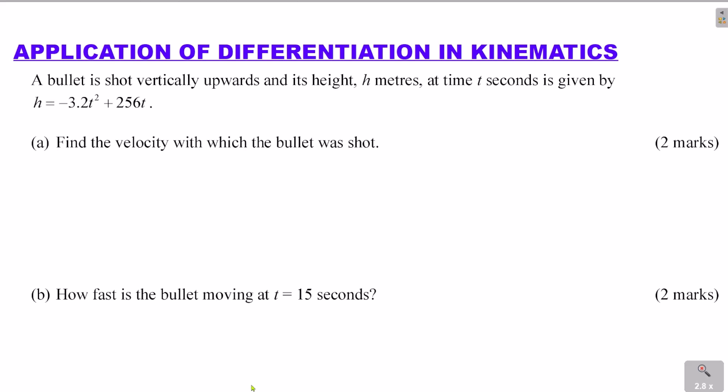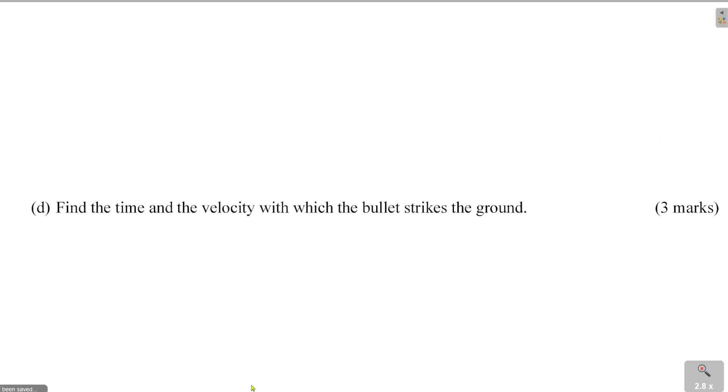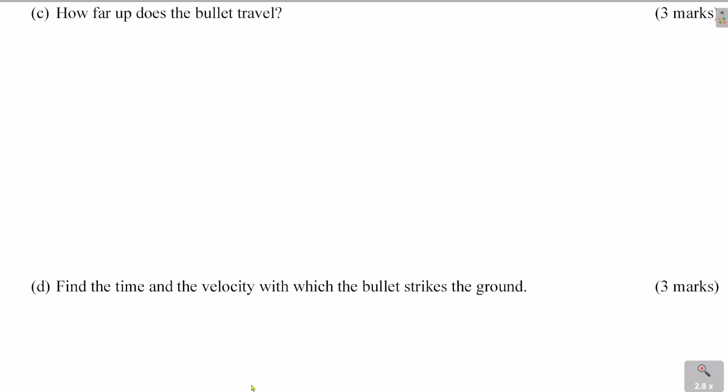A: Find the velocity with which the bullet was shot. B: How fast is the bullet moving at t equals 15 seconds? C: How far up does the bullet travel? D: Find the time and the velocity with which the bullet strikes the ground. Those are the questions.